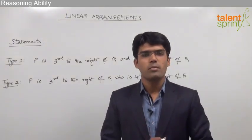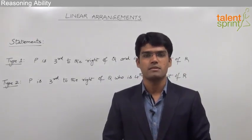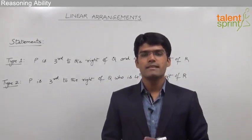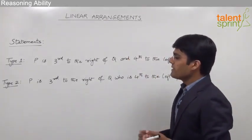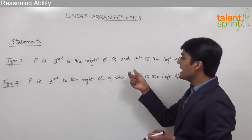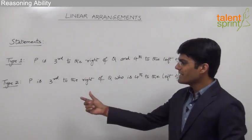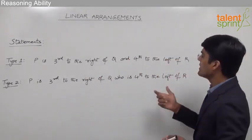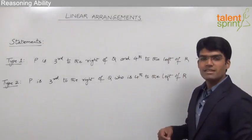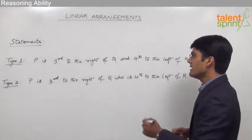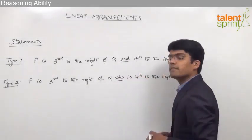The second important point we need to understand is the types of statements given in case of linear arrangements. As discussed in case of circular arrangements, there are two types of statements. Type one is: 'P is third to the right of Q and fourth to the left of R.' The second type is: 'P is third to the right of Q who is fourth to the left of R.' The only difference between these two types is the word 'and' in the first statement and 'who' in the second.